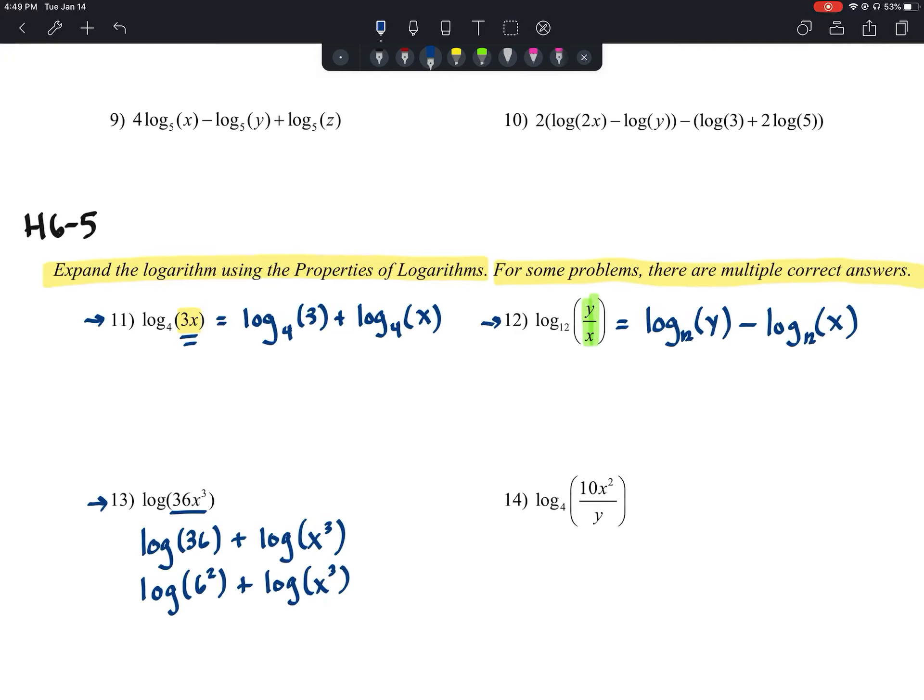Now, is that the only answer we could have gotten? No, it's not. We could take 6 and break it down even more if we wanted to. But the point of this is, are we understanding how to apply these properties going both directions?